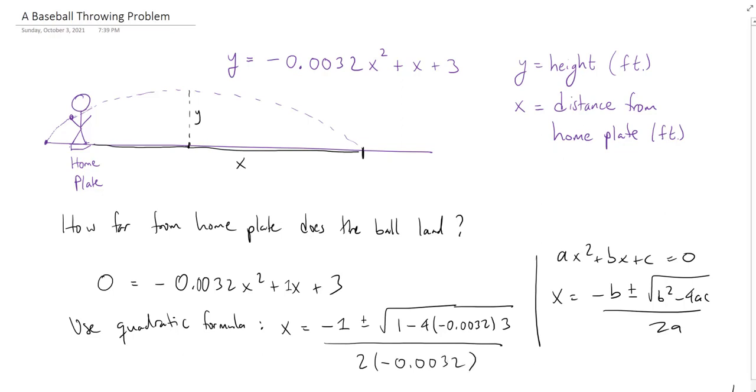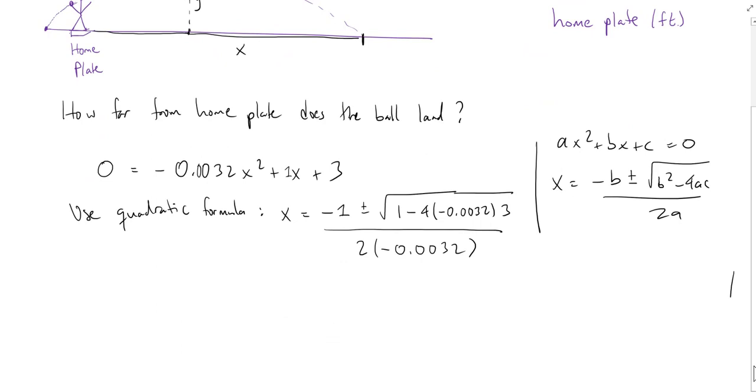And then we're going to divide by twice our leading coefficient. So negative 0.0032. All right. So we can run this through our calculator, and let's see what the two outputs we're going to get.